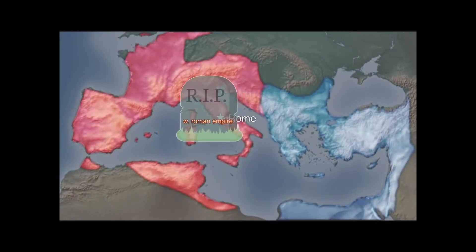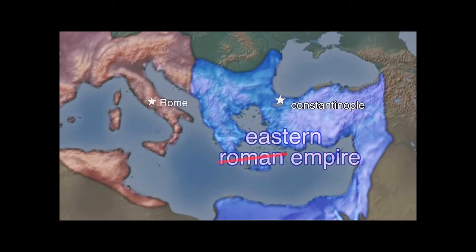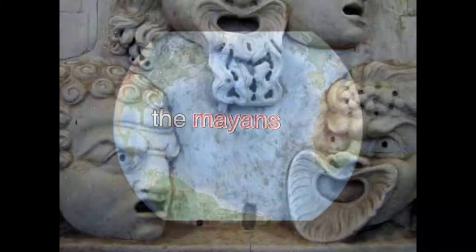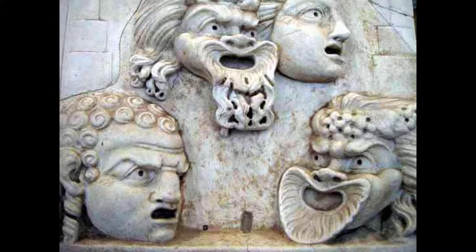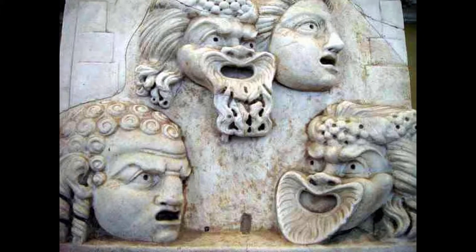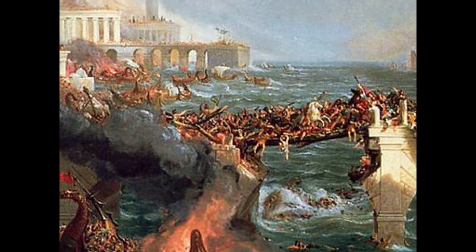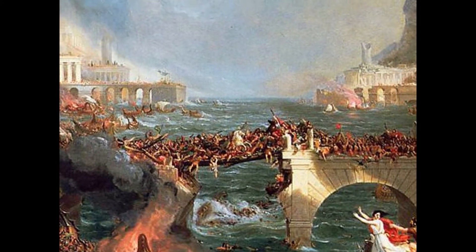As the empire split into west and east, the eastern part became known as Constantinople. The downfall of the Roman theater happened along with the downfall of the Western Roman Empire, which came about due to the disintegration of the government's administration.